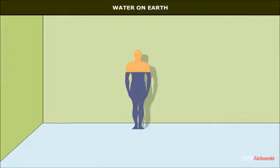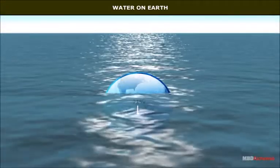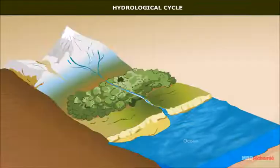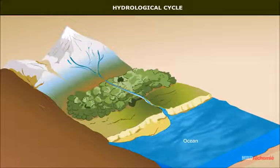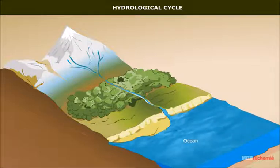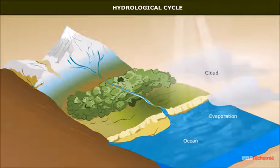Our body is mostly water — 60 to 70 percent — and oceans contain 71 percent of all water on Earth. The water continuously moves between the hydrosphere, atmosphere, and lithosphere. This movement of water is called the water cycle, or hydrological cycle. Sunlight falling on the surface of the ocean causes seawater to evaporate.